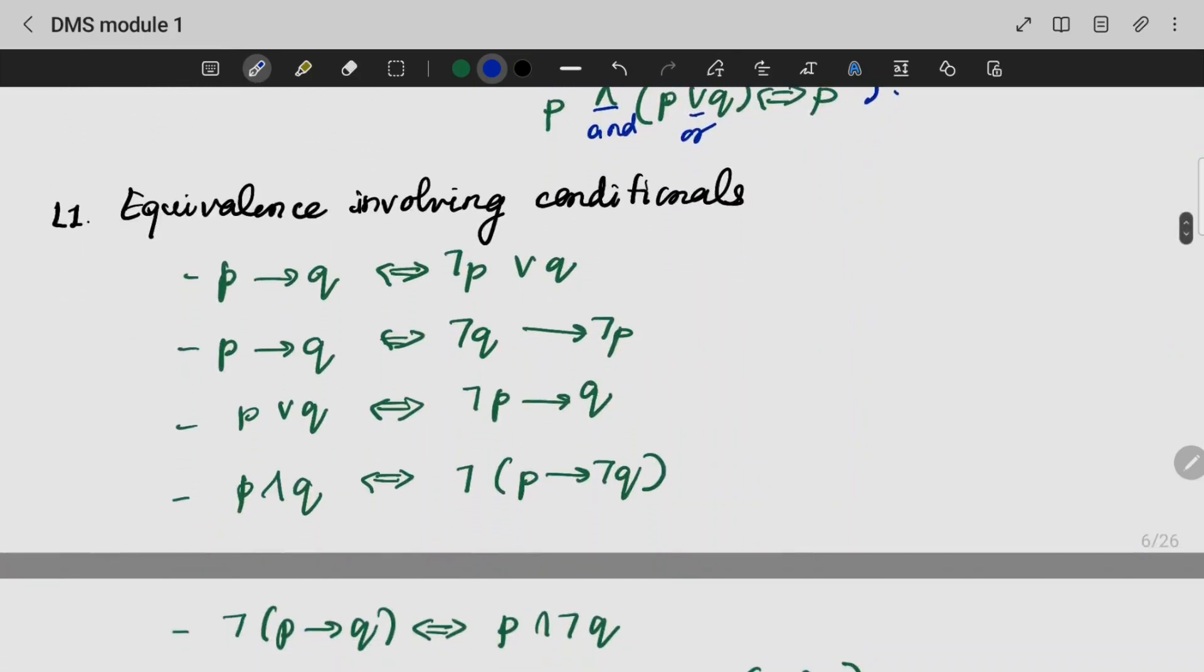Equivalence involving conditions. This is the first one to understand. P implies Q we can represent as not P OR Q. This is very important.